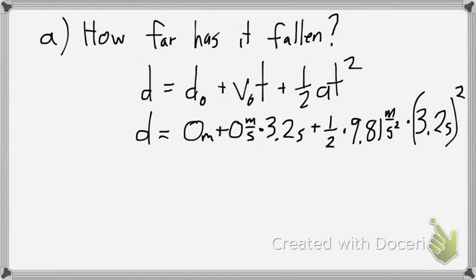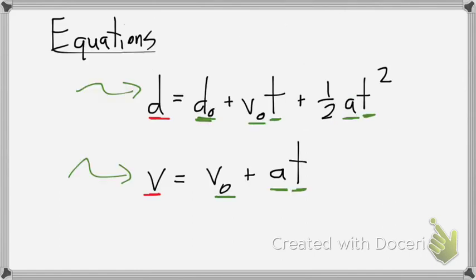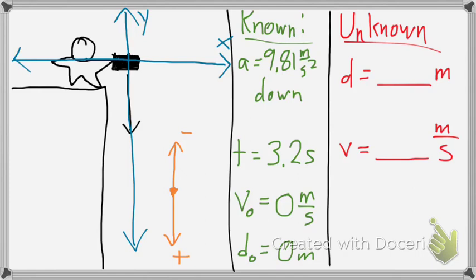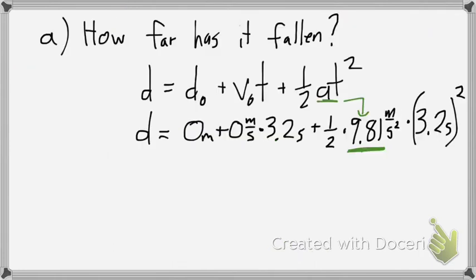One thing I want to point out is that I put positive 9.81 in for the acceleration. The reason I chose positive 9.81 and not negative 9.81 was from back here, where I said downward is positive, and that happens to be the direction of the acceleration. If you were using a more traditional format, where up is positive and down is negative, you would want to put in negative 9.81 into that spot. Well, zero plus anything, that doesn't add anything. Zero times 3.2 is just zero. So I can simplify this equation down a little bit.